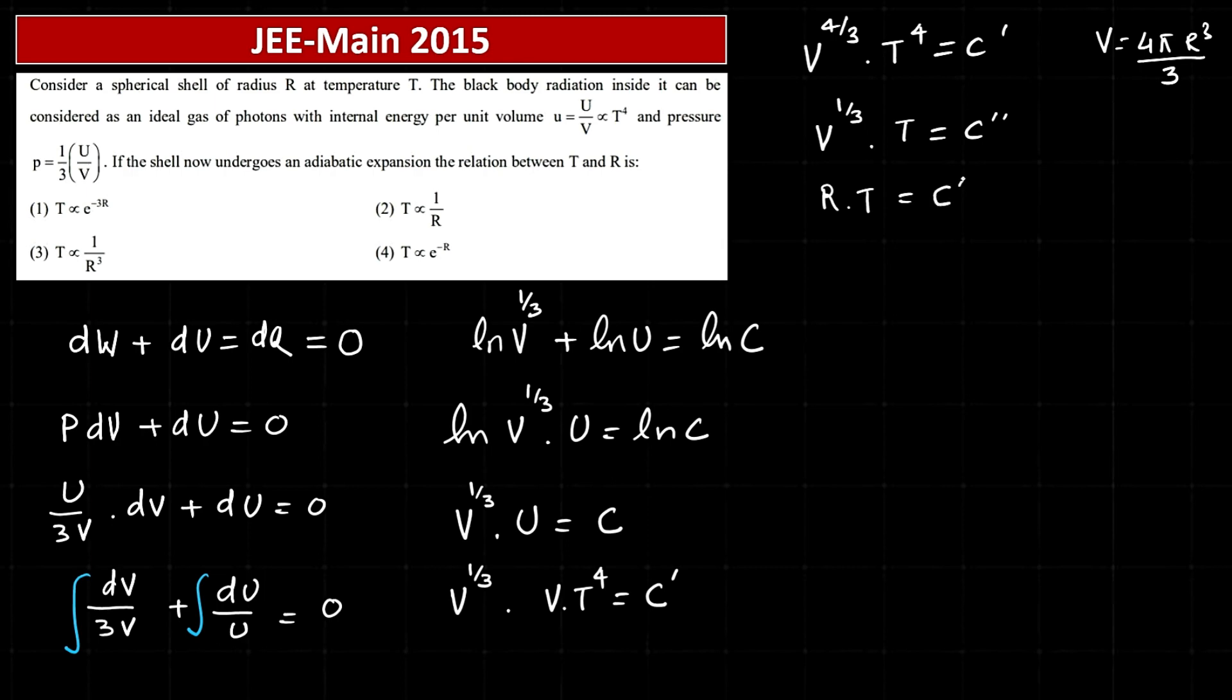So that is R into T, and here another constant, say C triple dash, comes. So now we have got the relationship between T and R: that T equals C triple dash by R. So finally I can say that T is proportional to 1 by R, and that is our answer.